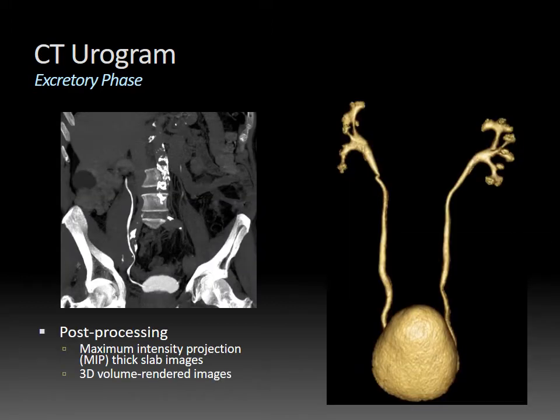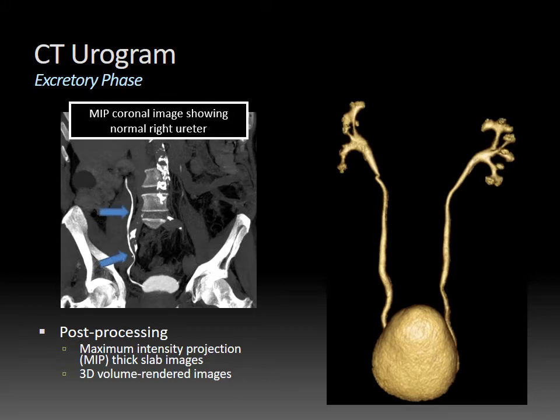There are various post-processing techniques you can do with CT urography. One is generating maximum intensity projection, or MIP, images with thick slab reconstruction. A MIP takes the voxels with the highest attenuation value on every view throughout a given volume and projects them onto a single image, displaying high-density structures like bone and contrast-filled structures preferentially. You can see the right ureter containing excreted contrast very conspicuously, as well as the bladder. You can also adjust the obliquity of these images to highlight a particular structure.